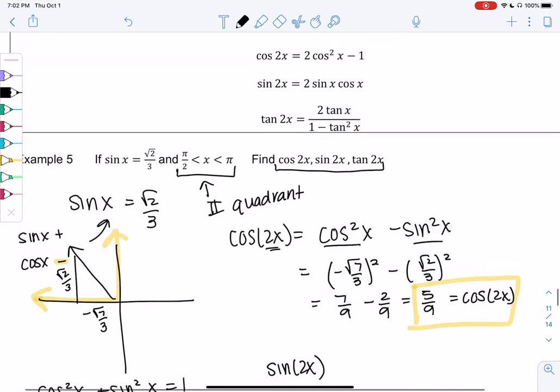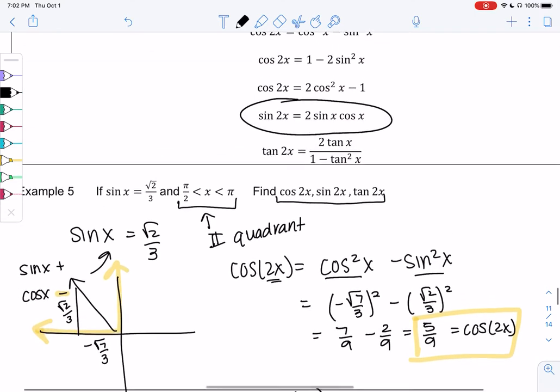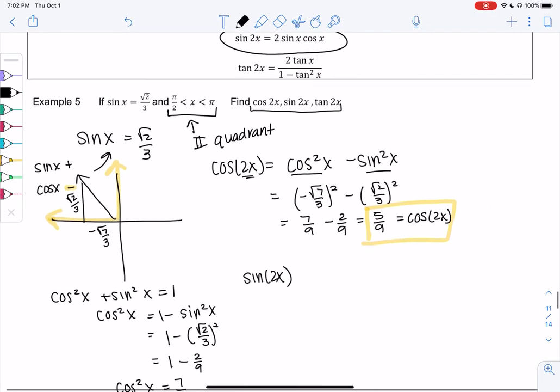So sine of 2x, we'll use this formula, 2 sine x cosine x. So just 2 times sine, which was root 2 over 3, and then cosine was negative root 7 over 3.